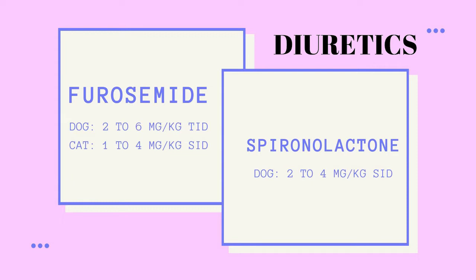Spironolactone belongs to the potassium-sparing group. It is used for treating high blood pressure and congestion caused by heart failure, and is considered the standard therapy for the treatment of congestive heart failure caused by valvular disease. Spironolactone is not commonly used in cats because it tends to produce skin dermatitis.